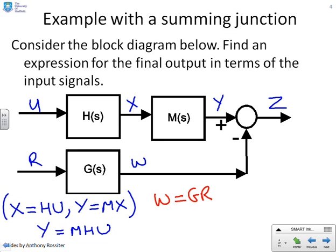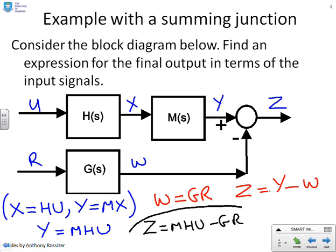And now the final point is to look at this summing junction. And the summing junction gives me z equals y minus w. Or if I put this finally at the bottom, combine all the expressions together, it means I get z equals mhu minus gr. Don't worry about the fact that that expression doesn't seem to be particularly simple. You can't make it any simpler. There are two inputs to this loop, u and r, and therefore z has to be defined in terms of both inputs.